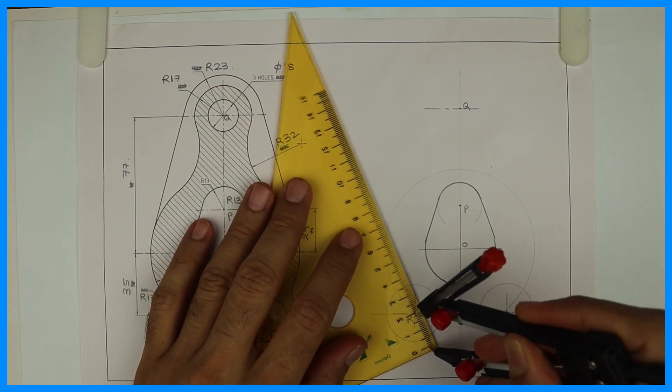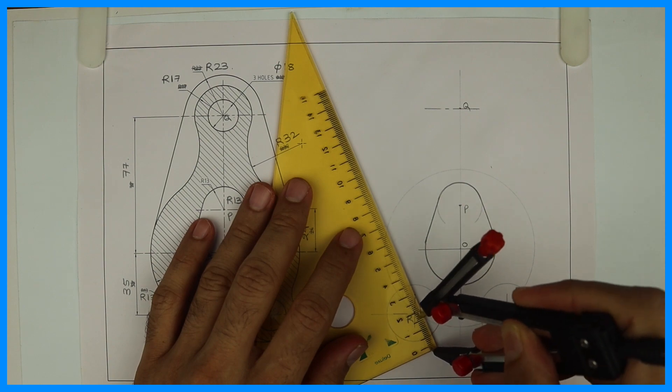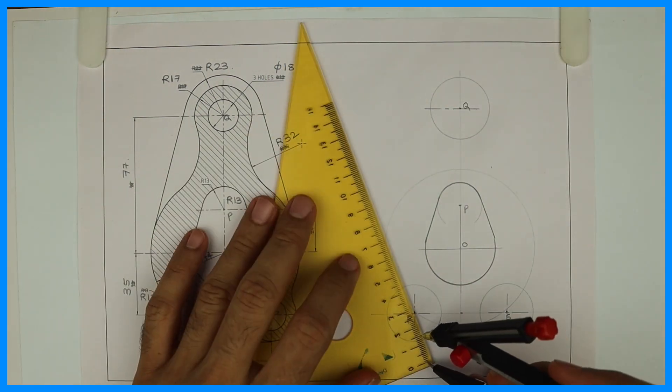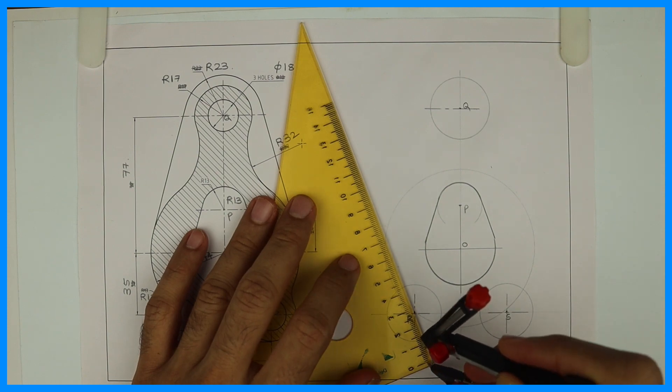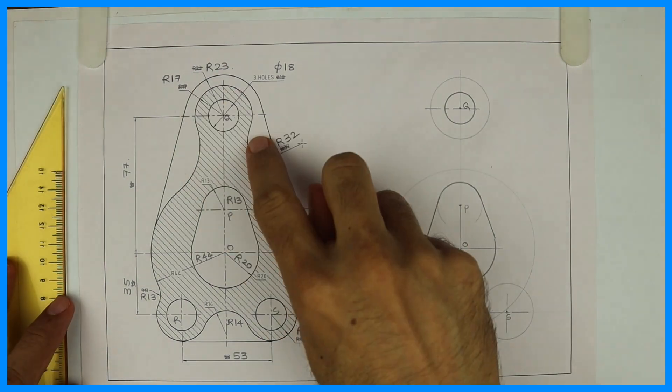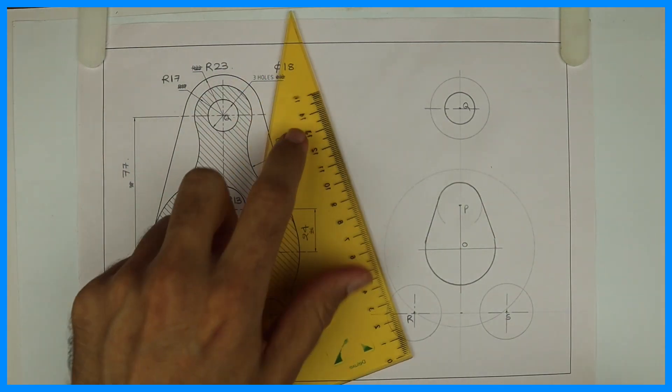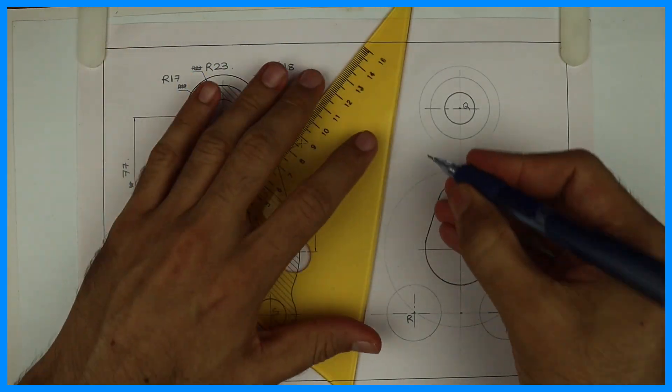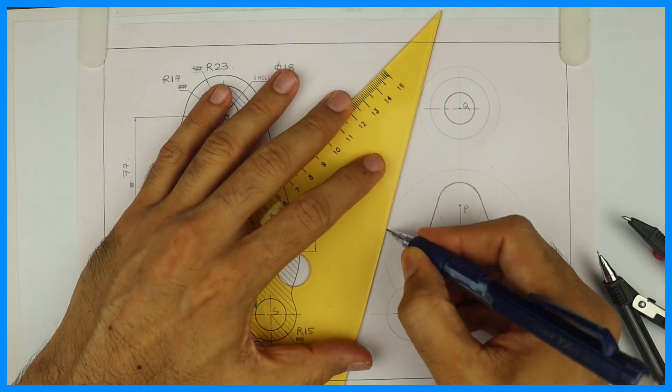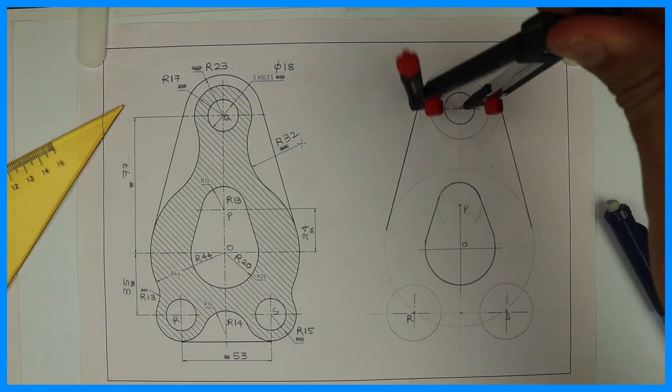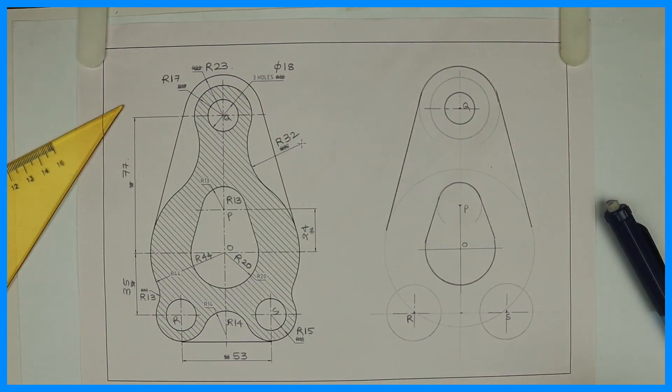See first is radius 17. Then we have diameter 18, so that is radius 9. Then we have outer radius also which is 23. After that you can draw tangent. See after drawing the tangent you can draw remaining circle dark.